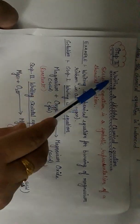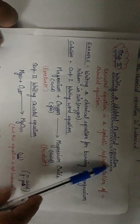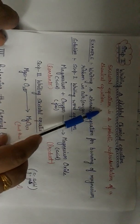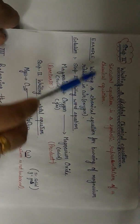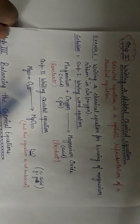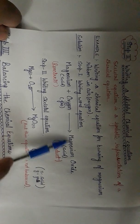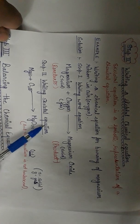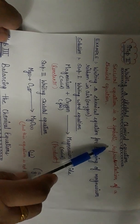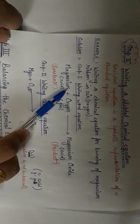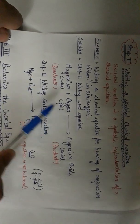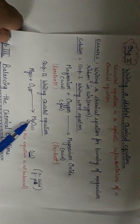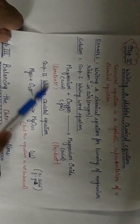The second step is writing a skeletal chemical equation. What is a skeletal equation? A skeletal equation is a symbolic representation of a chemical equation. In the first step we wrote the word equation — magnesium, oxygen — writing them in the form of words. Now in the skeletal equation we show the symbols. We have to write the symbols: the symbol of magnesium is Mg, the symbol of oxygen is O2, and it is forming magnesium oxide whose symbol is MgO. This is how we write the skeletal equation.